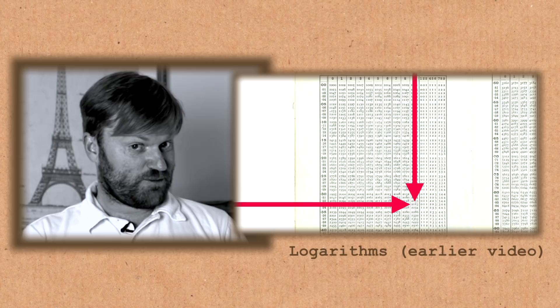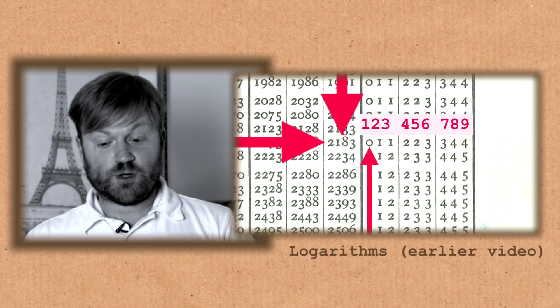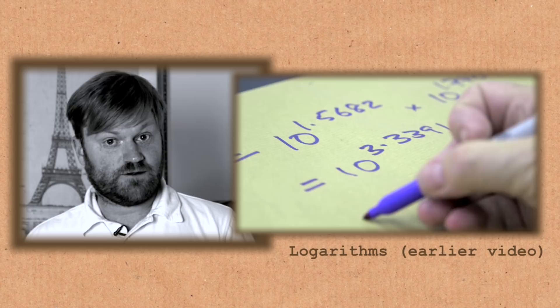But at the end of the last one, we promised we'd talk about how these tables were created. Now the log tables we were looking at were in base 10. All numbers were sort of converted to a power of 10. But that's not how the first tables were created.